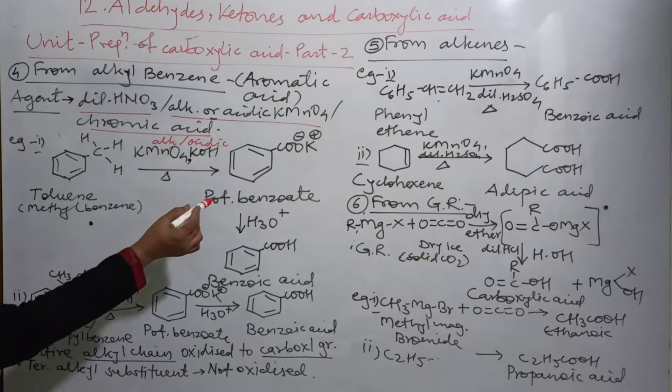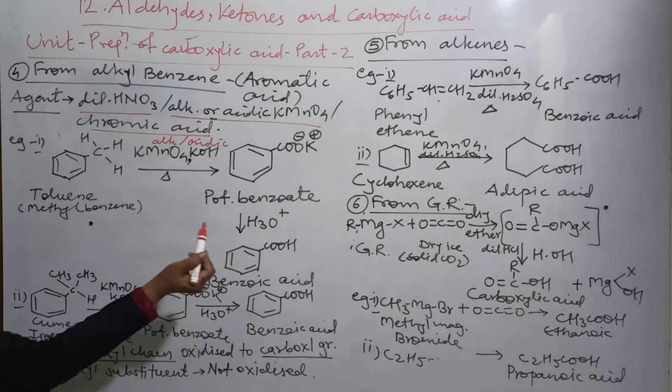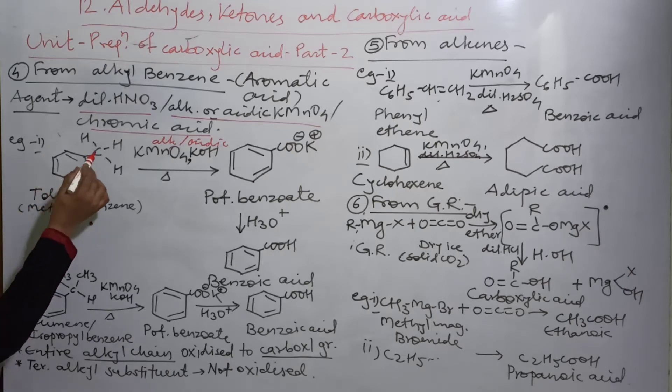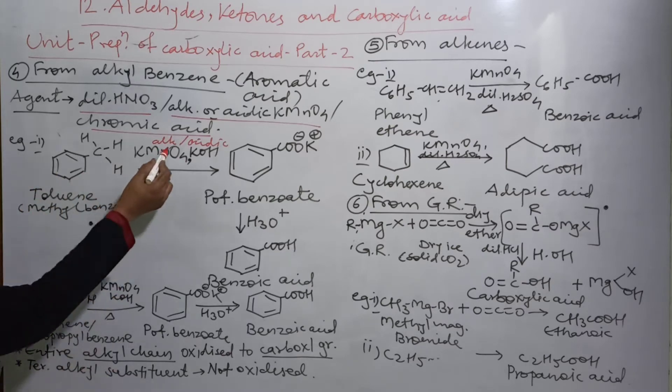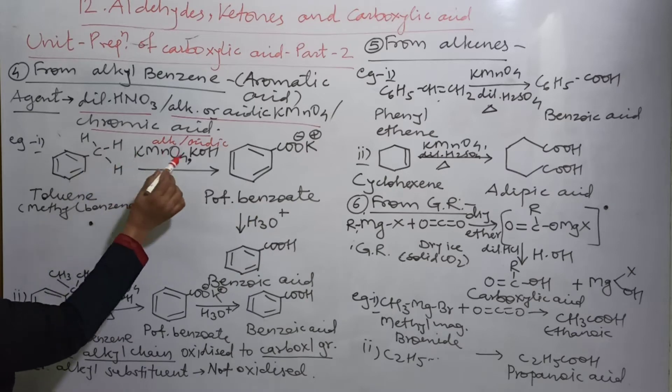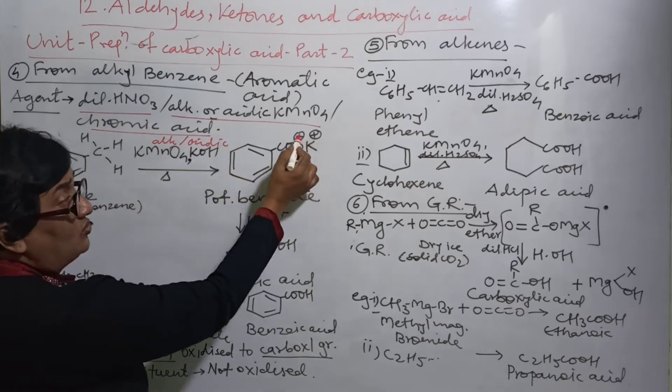Now aromatic acids are prepared. For example, benzoic acid is taken as the standard example. Here the first example is toluene, which is also called methyl benzene. Methyl group is attached with the benzene ring. With this condition it gives first potassium benzoate COOK. You have to write charges.